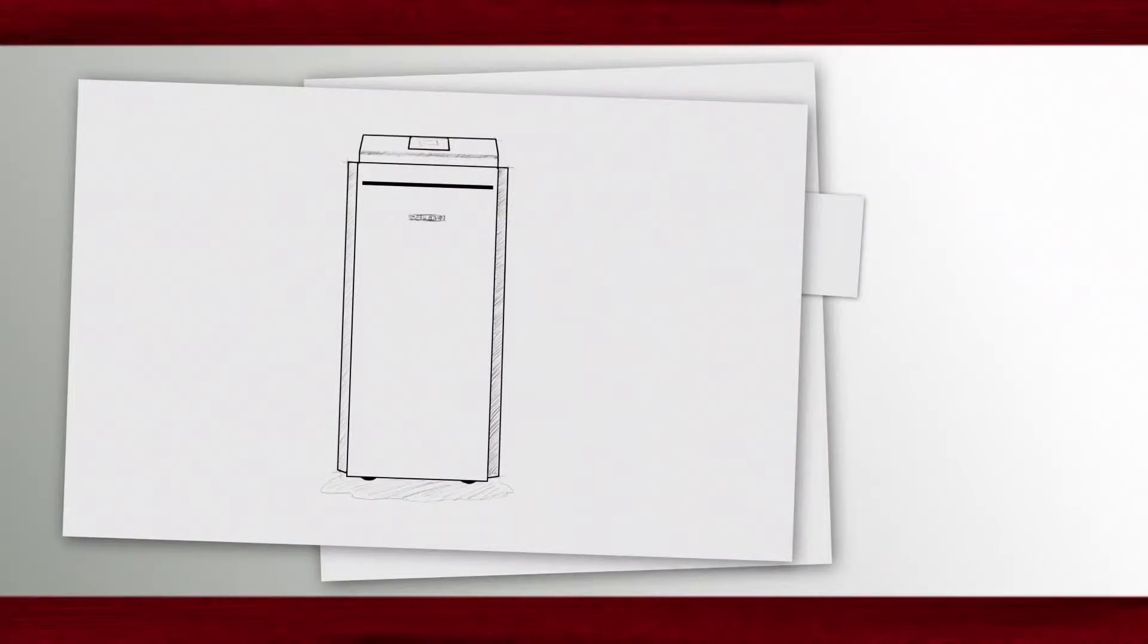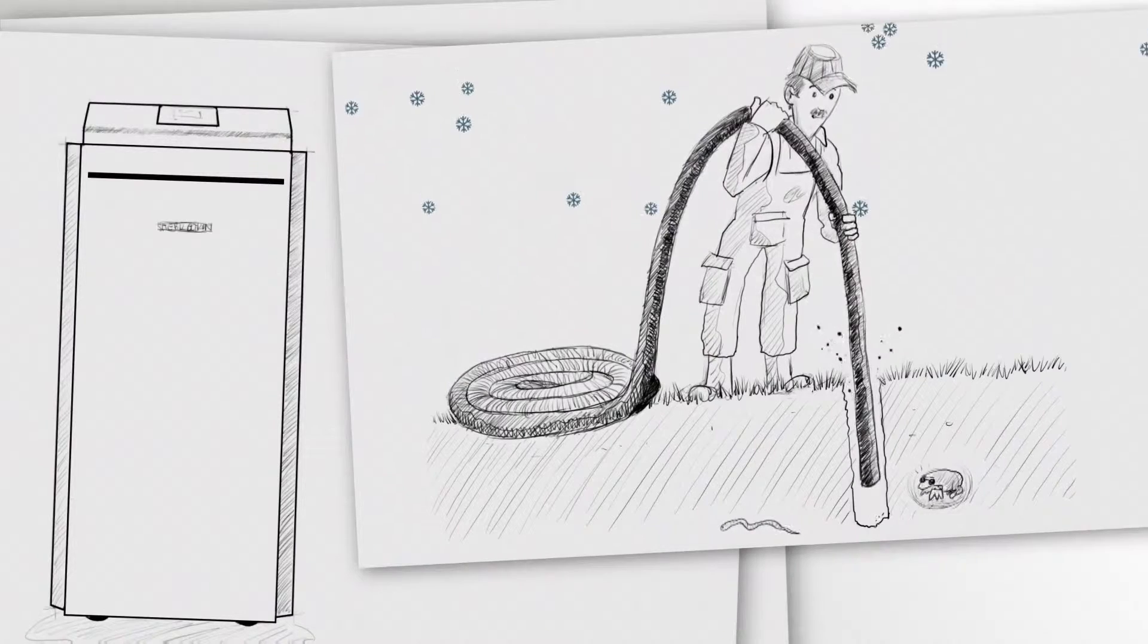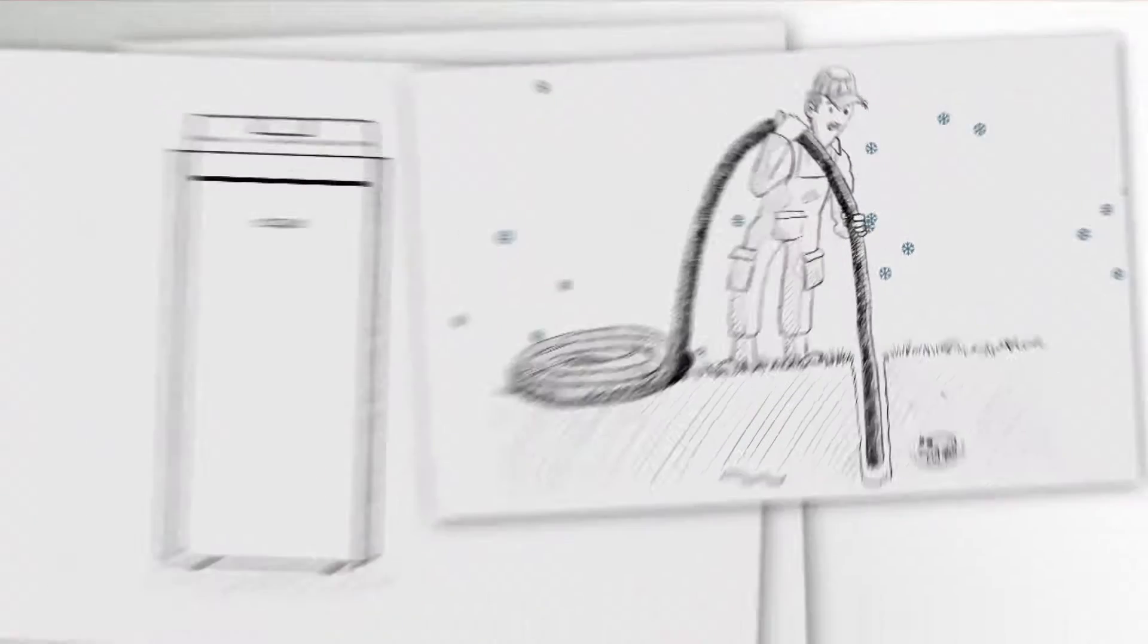In order to use the heat in the ground you need a brine to water heat pump. These are also called ground source heat pumps in the UK. Even when it's freezing outside, a constant temperature is held deep in the ground.